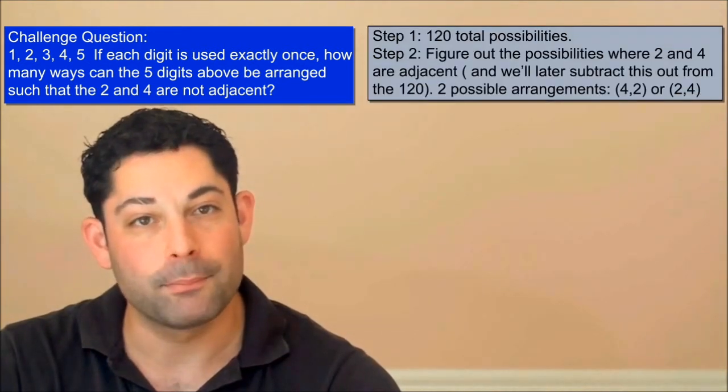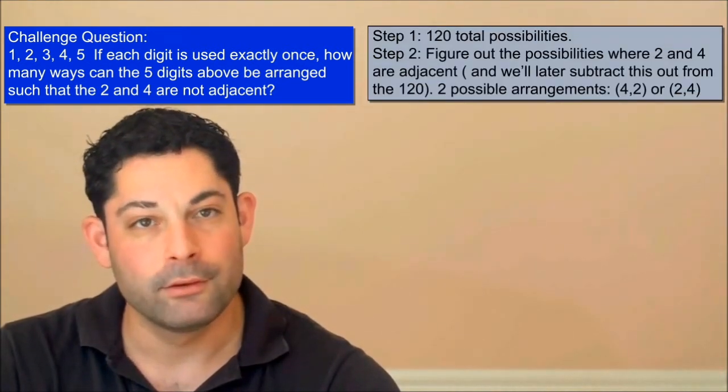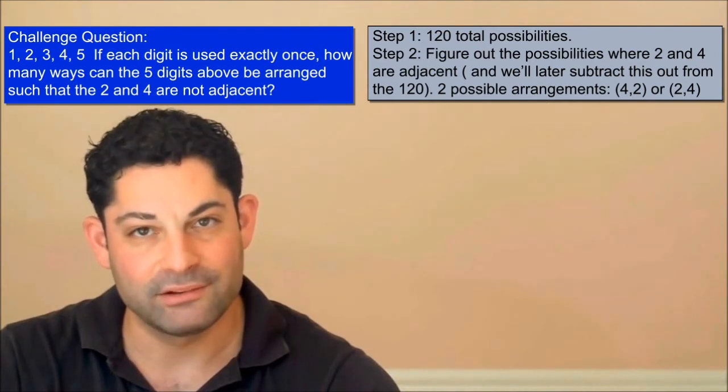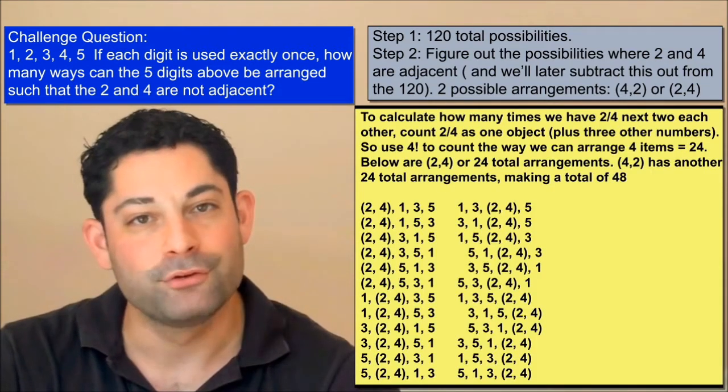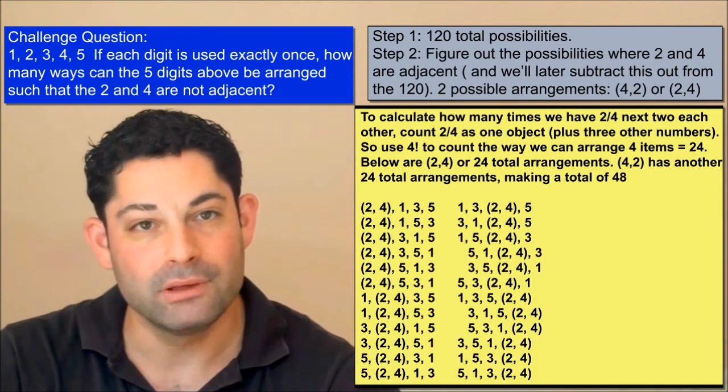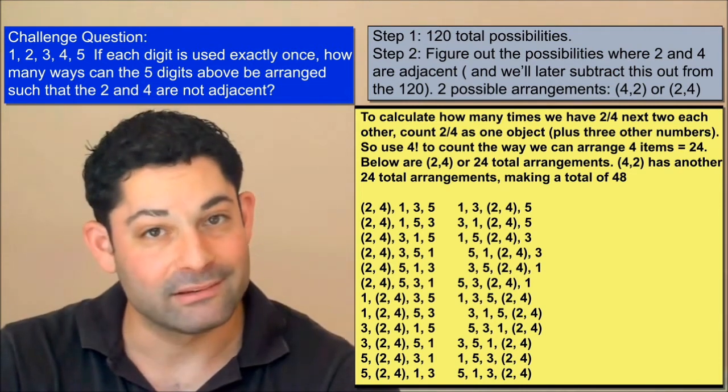The second step is to break up the term adjacent. There are two ways that the two and four can be adjacent. The two can be to the right of the four, or the two can be to the left of the four. The trick here is to realize that two can be to the right of the four in exactly as many times as it can be to the left of the four.